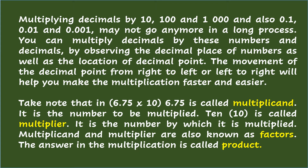Multiplying decimals by 10, 100, and 1000, and also one-tenth, one-hundredth, and one-thousandth may not require a long process. You can multiply decimals by these numbers by observing the decimal place of numbers as well as the location of the decimal point. The movement of the decimal point from right to left or left to right will help you make the multiplication faster and easier.